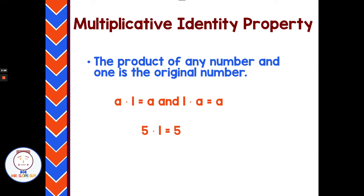The multiplicative identity property involves multiplying and getting back the same number you started with — it has to do with multiplying by 1. The product of any number and 1 is the original number. So A times 1 is A, and 5 times 1 is 5. A very long name for a very simple and easy-to-spot property.